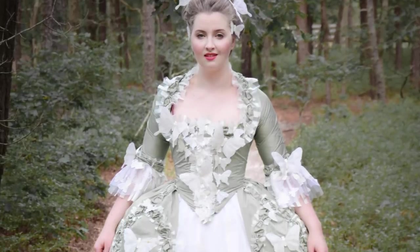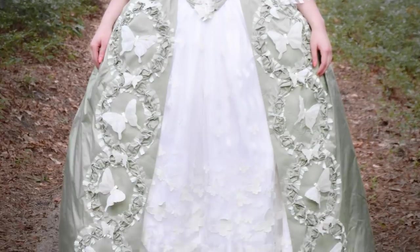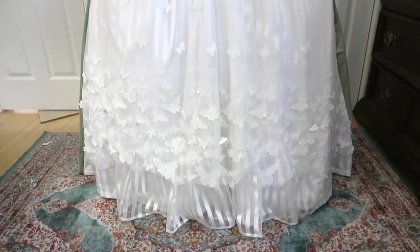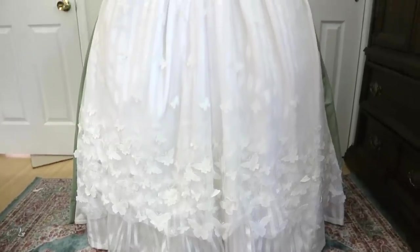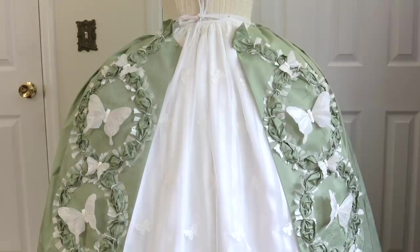Hello everyone, and welcome to the third and final installment of making a green and white rococo gown, also known as the butterfly dress. If you missed the previous two videos about this project, they'll be linked in the description box. In the previous videos I made the underskirt and overskirt, and today I'll be making the bodice.